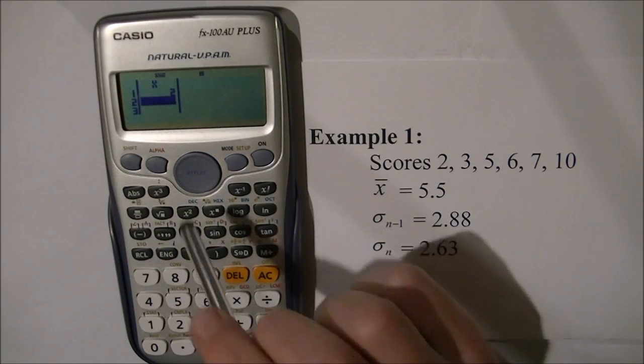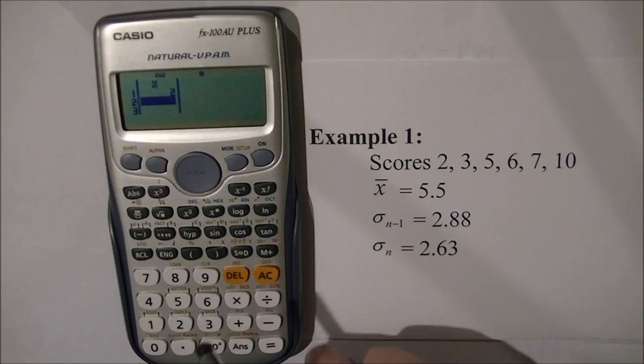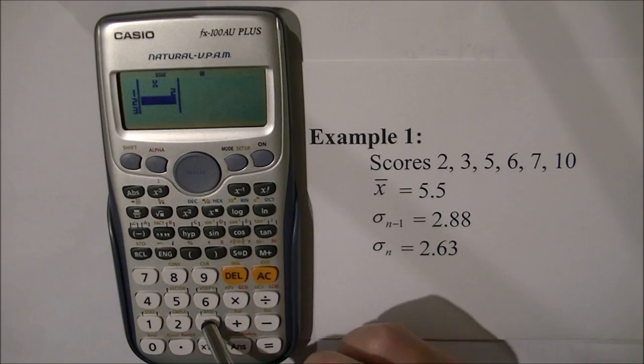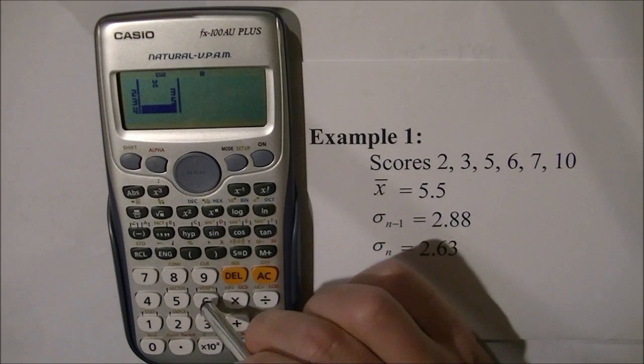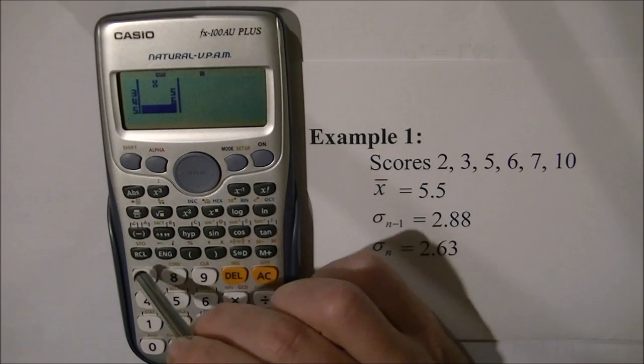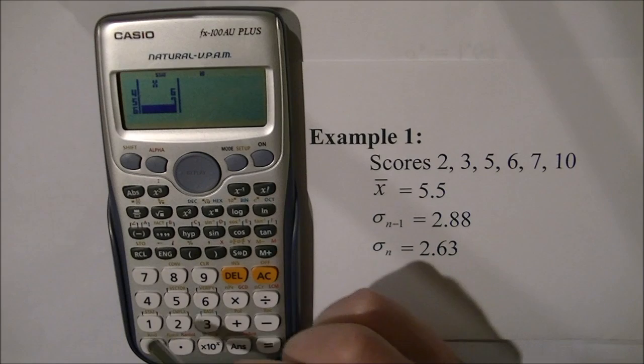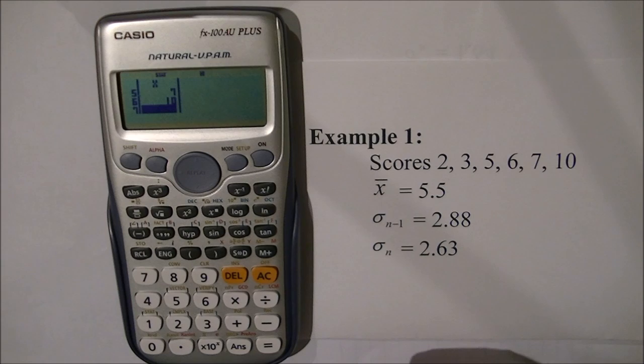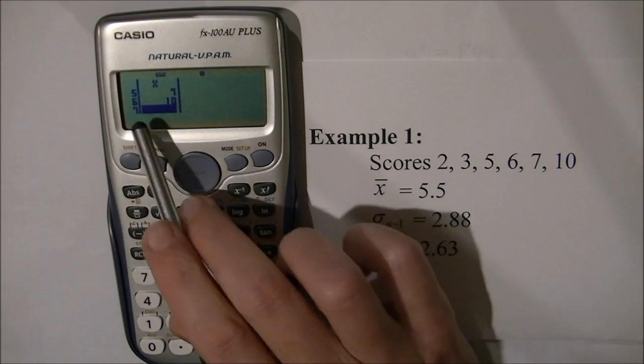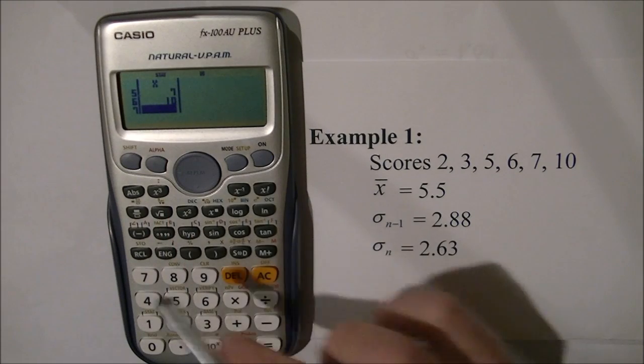equals. It shows I've entered 2 as the first value. Then 3 equals, 5 equals, 6 equals, 7 equals, and 10. It's important at the end of all your scores to press equals so they're entered into the calculator. There are my 6 scores.